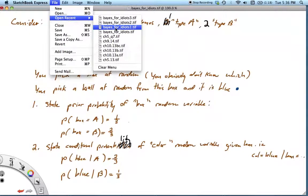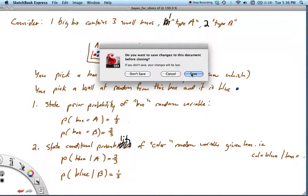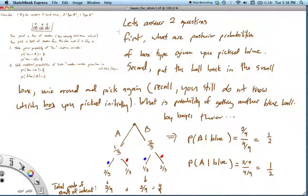There's two questions we want to answer. First of all, what are the posterior probabilities of the box type given that we picked that blue ball? Secondly, we want to put the ball back into the small box, and we mix it around and we pick again. Recall that you still don't know which box you picked initially. So the question is, what is the probability of drawing another blue ball?